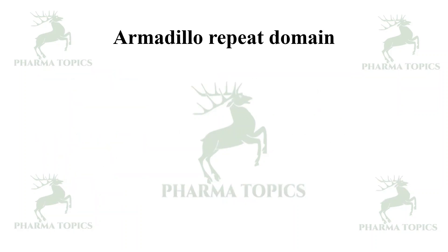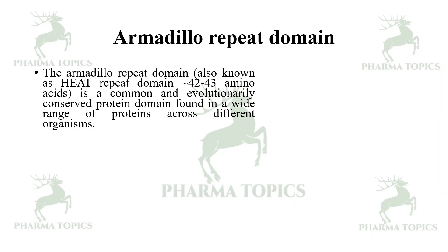There are different kinds of domains. The first is the armadillo repeat domain, also known as the HEAT repeat domain. It has approximately 42 to 43 amino acids and is a common and evolutionarily conserved protein domain found in a variety of proteins across different organisms.